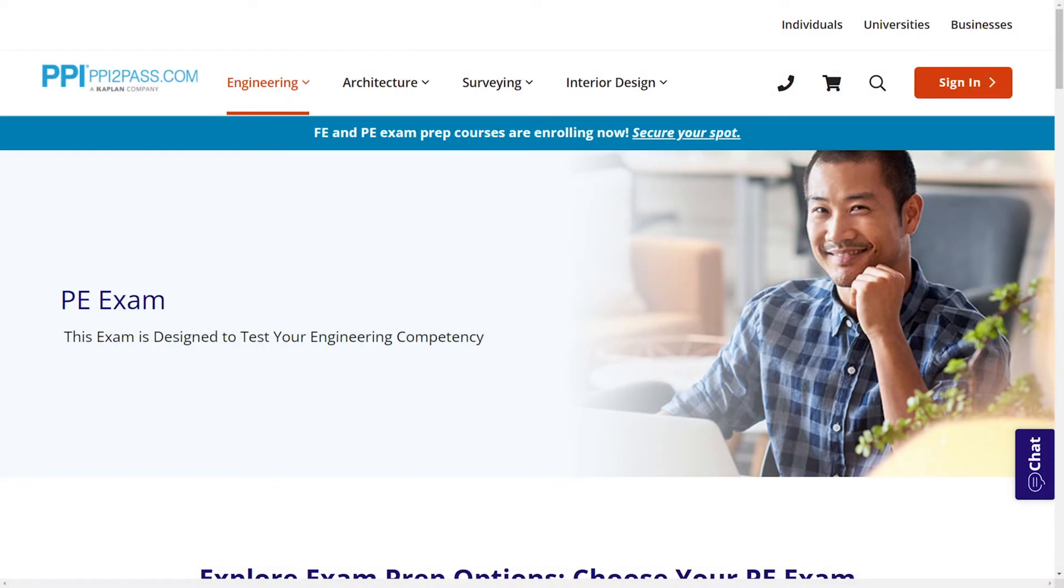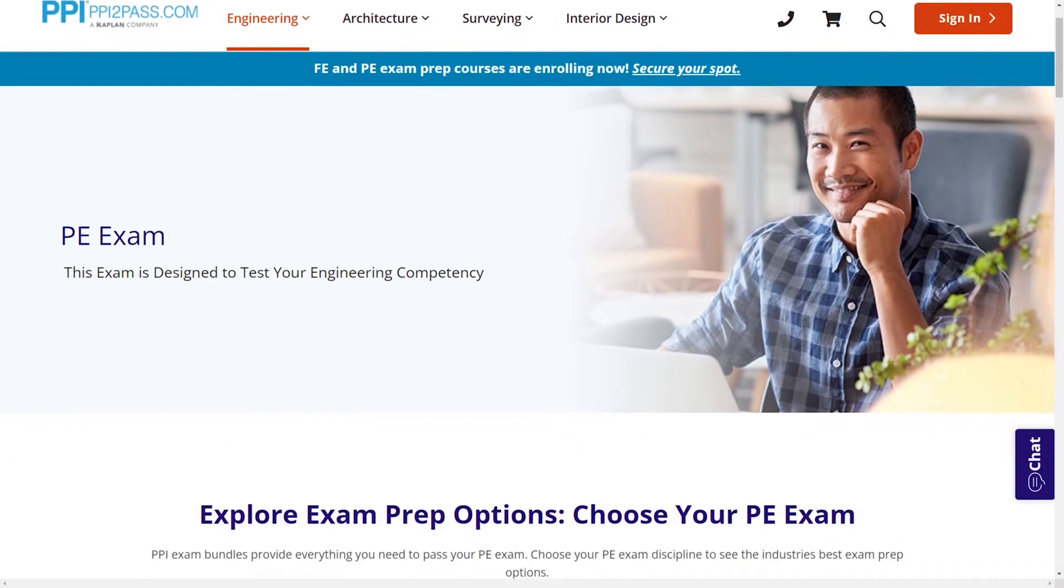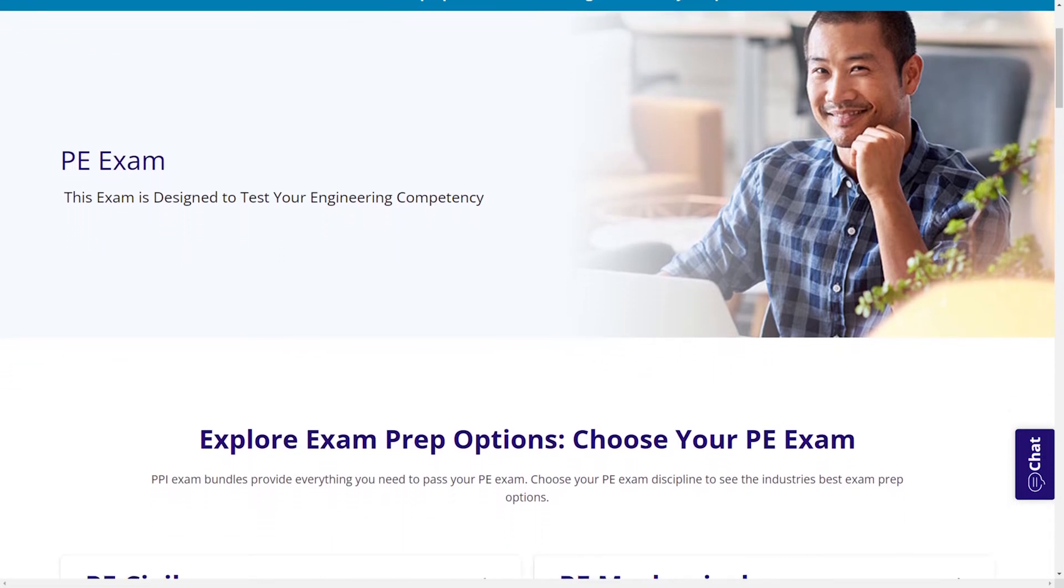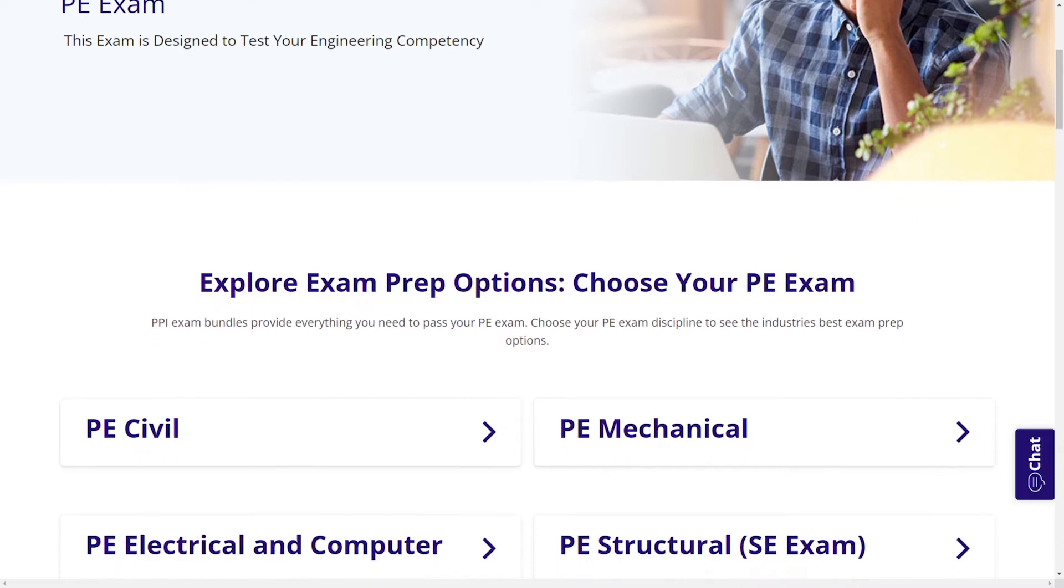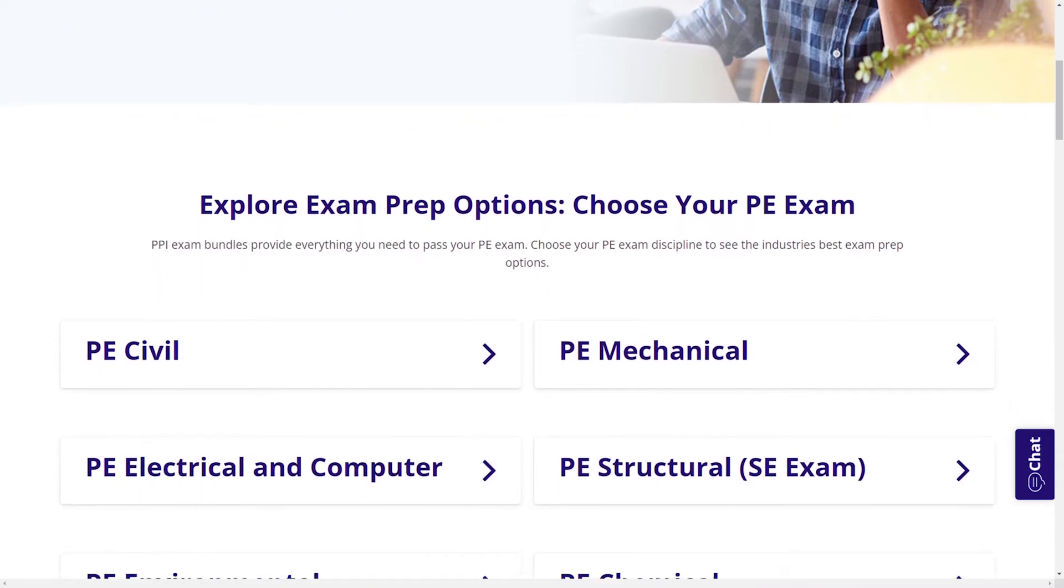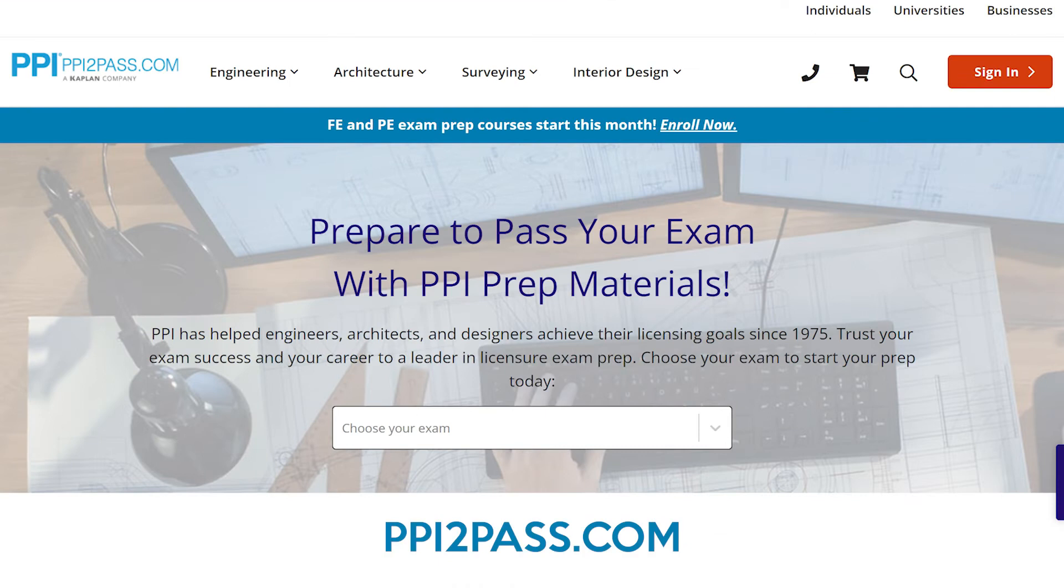When you take a live online course, PPI guarantees you will pass or you can take the on-demand course for free. With study guides, practice exams, and more, the PPI Learning Hub offers digital practice and review that you can take with you anywhere you have a device so that you can prepare during the times most convenient for you. Check out PPI today at ppi2pass.com to see all the options available for PE exam prep.